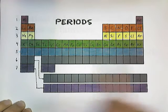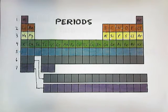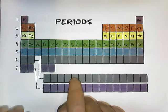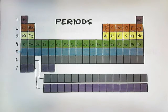So all these horizontal rows, those are periods. Now there are two horizontal rows below the main chart. These have separate names that we'll get to later.